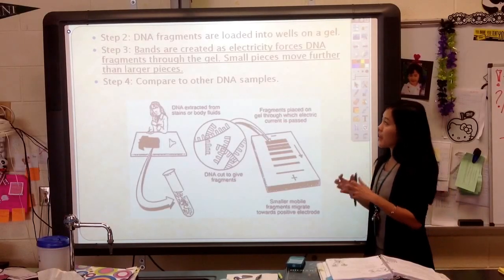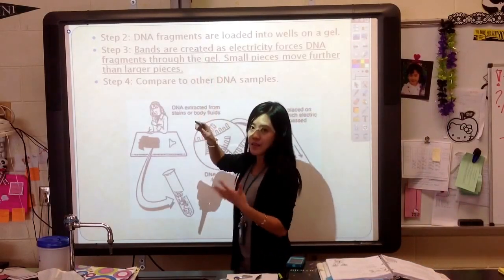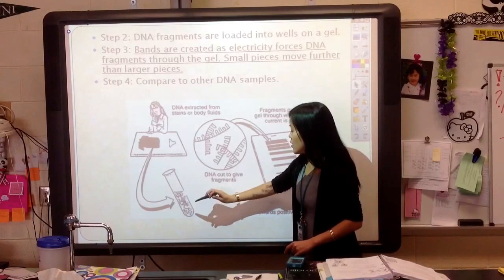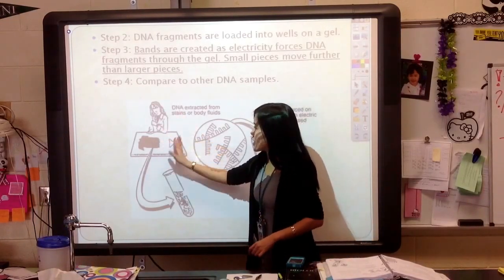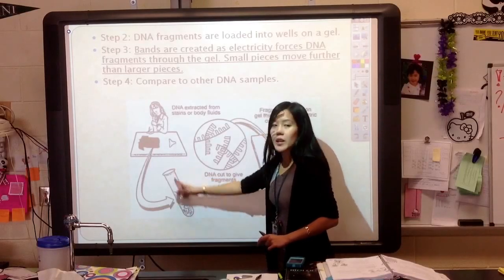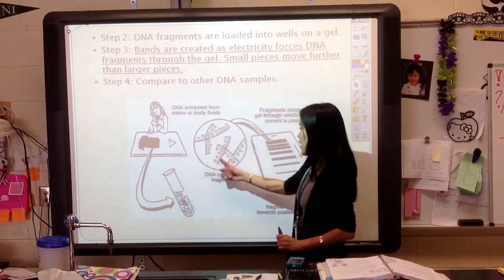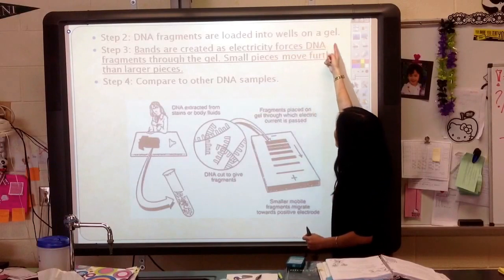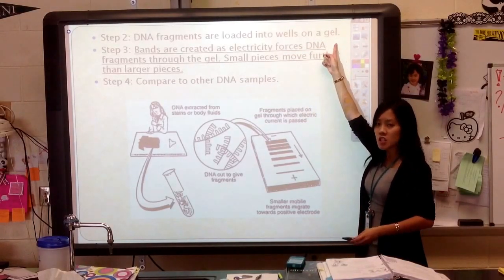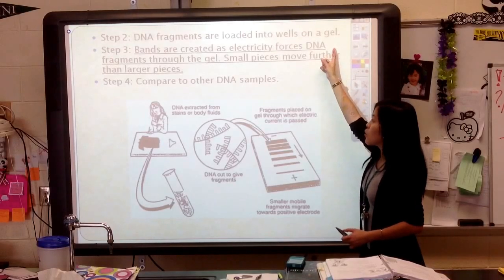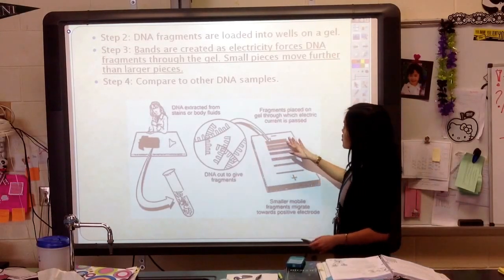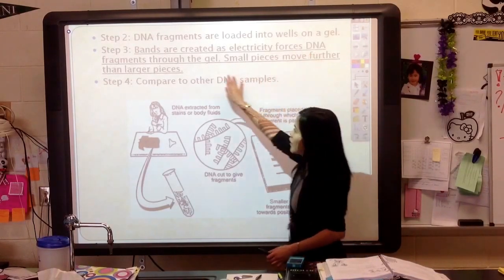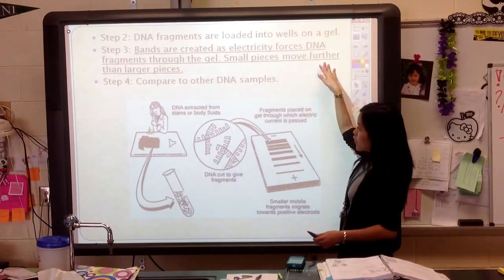Step two: after we cut the DNA, the DNA fragments — now they're pieces or fragments. In this picture they're showing you DNA from stains on clothes. You'll put it into some sort of container, use your restriction enzymes to cut the DNA, and then load it up into the wells on a gel — and this is referring to the gel electrophoresis machine. When you load it in there, we're next going to use electricity to force the DNA fragments through the gel. Small pieces will move further than larger pieces.